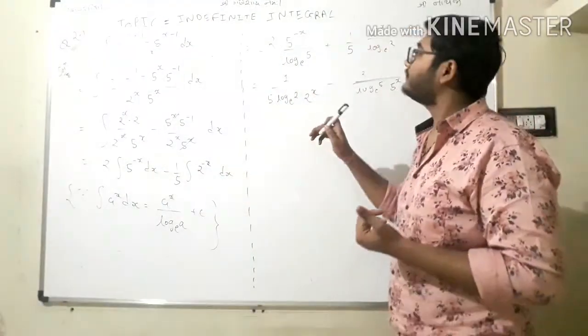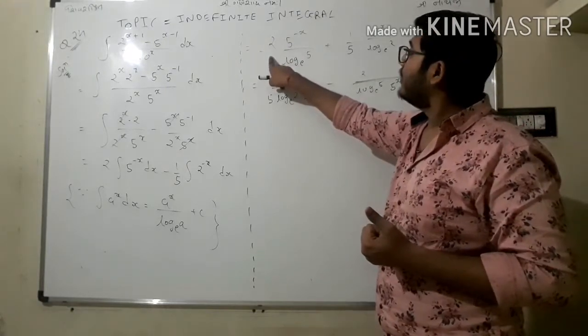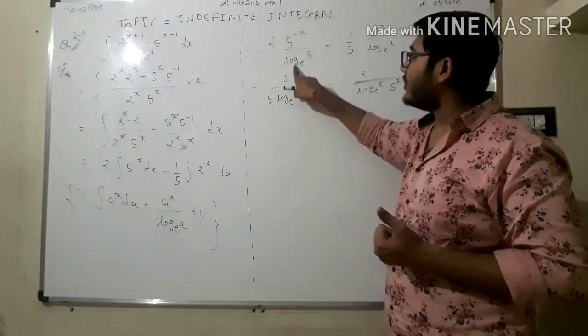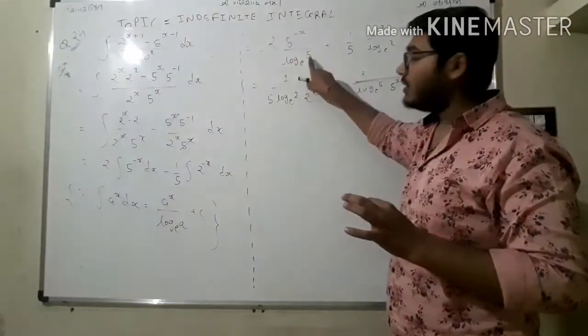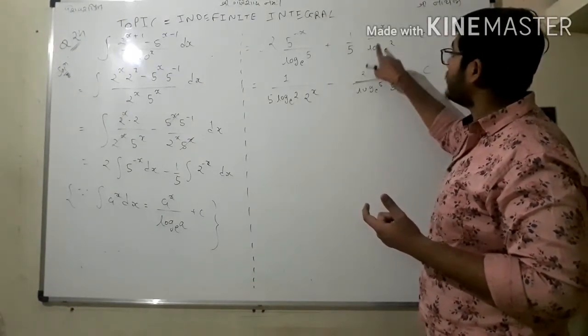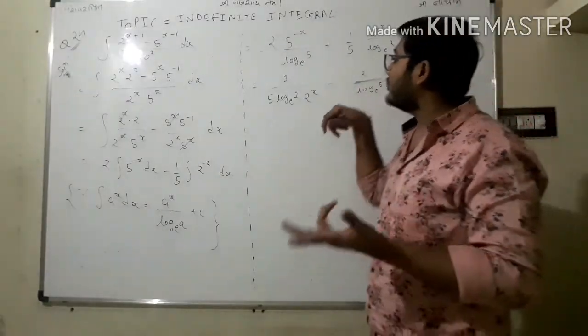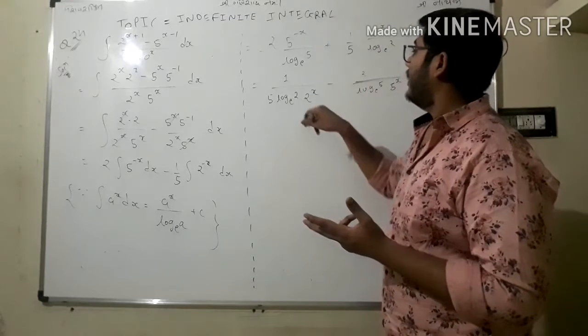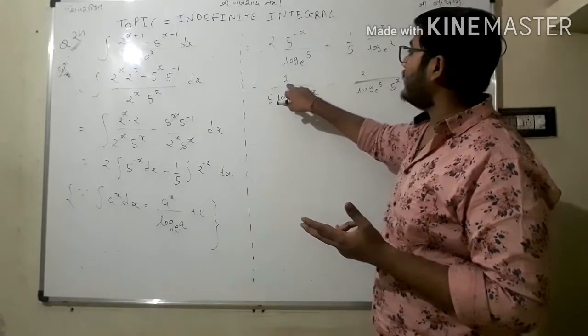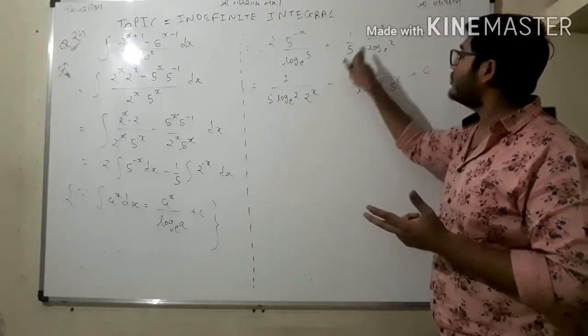So what we have to do is 2 raised to minus x upon log e base 2 minus 2 upon 5, 5 raised to minus x upon log e base 5. Then after plus 1 upon 5 as it is, 2 raised to minus x upon log e base 2 plus c.